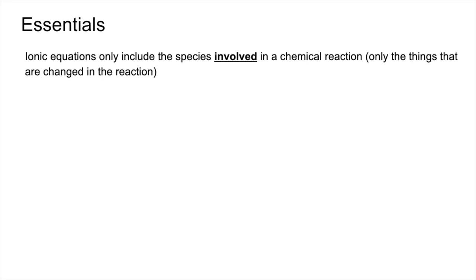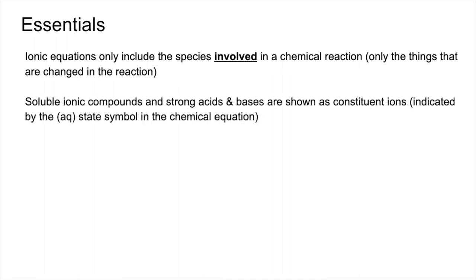We'll start with the essentials. Ionic equations only include species involved in the chemical reaction. In other words, only the things that are changed. Soluble ionic compounds and strong acids and bases are shown as their constituent ions.